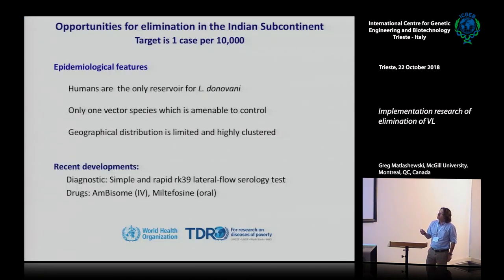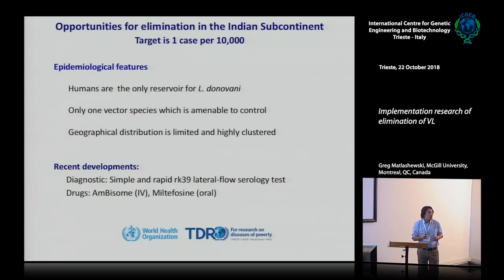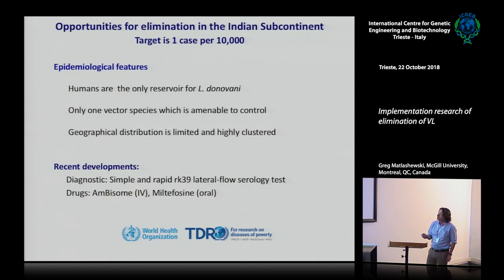Some epidemiologic features that allow you to consider an elimination program: humans are the only reservoir; there's only one vector, and the vector can be dealt with through effective vector control mechanisms — though logistically that's very difficult. Strong efforts to control the vector are underway, which I won't get into in this talk. The geographic distribution is also highly limited and clustered.